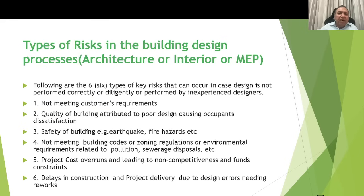What are the different types of risks which building designers can contribute to? Following are the six types of key design risks that can occur when design is not performed correctly, diligently, or is performed by inexperienced designers: not meeting customer requirements; poor quality of the building attributed to poor design causing occupant dissatisfaction; safety of the building, for example earthquake and fire hazards; not meeting building codes, zoning regulations or environmental requirements related to pollution, sewerage and disposal; project cost overruns leading to non-competitiveness and fund constraints; and delays in construction and project delivery due to design errors needing rework.